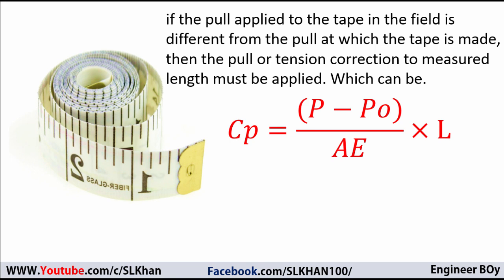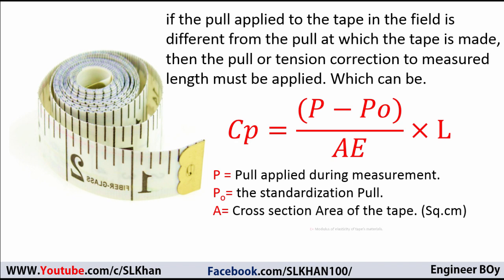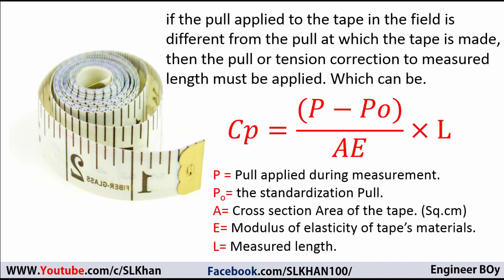The formula is Cp equals P minus P₀ times L divided by A times E, where P equals the pull applied during the measurement, P₀ is the standard pull at which the tape was manufactured, A is the cross-sectional area of the tape in square centimeters, and E is the Young's modulus or modulus of elasticity of the tape material.